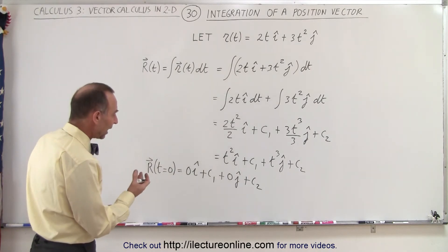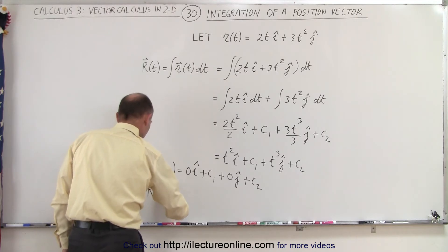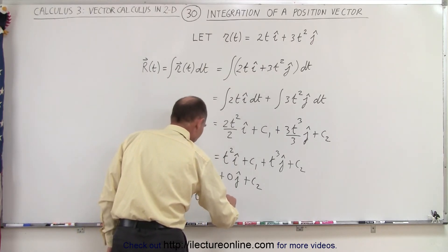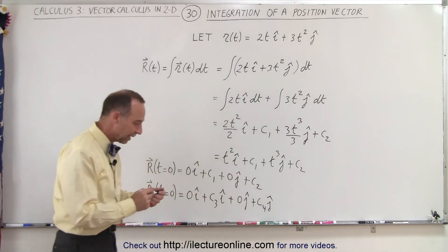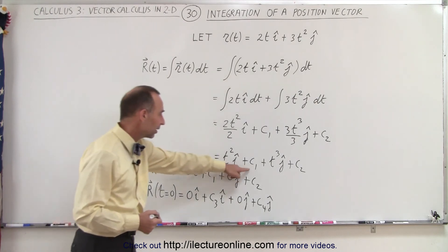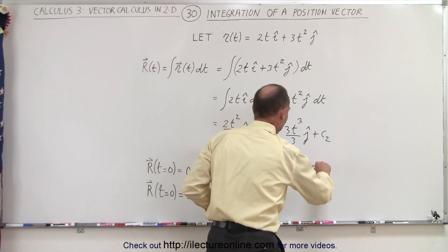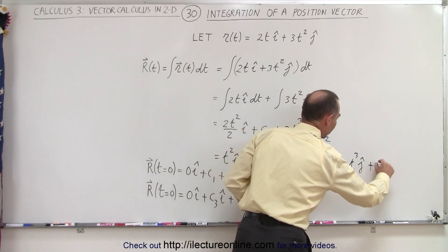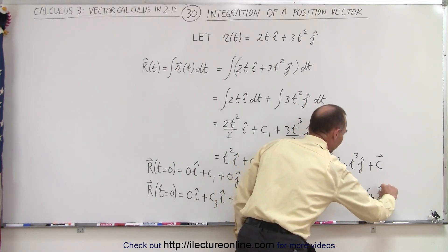So c1 and c2 are actually the value in the i direction and the j direction respectively. This can be written as r at t equals 0, equal to some value c3 in the i direction plus c4 in the j direction — some component in i plus some component in j. Accounting for these as positions in x and y, this then becomes t squared in the i direction plus t cubed in the j direction plus some vector c, where c equals c3 in the i direction plus c4 in the j direction.